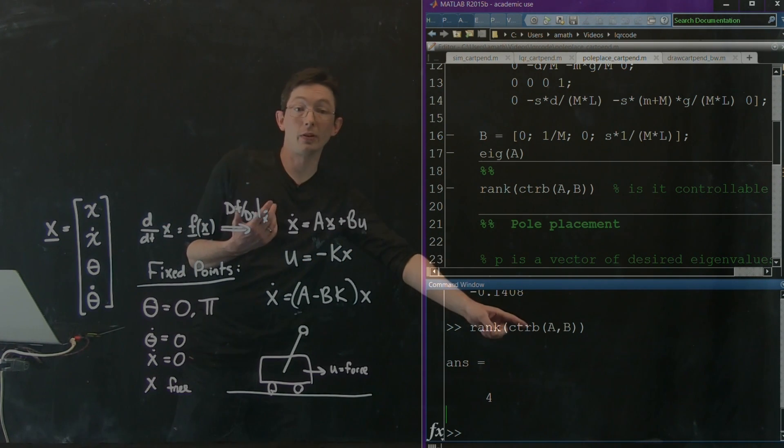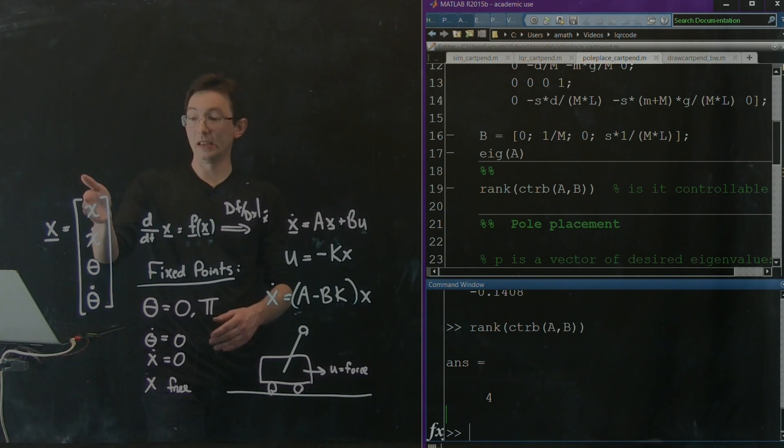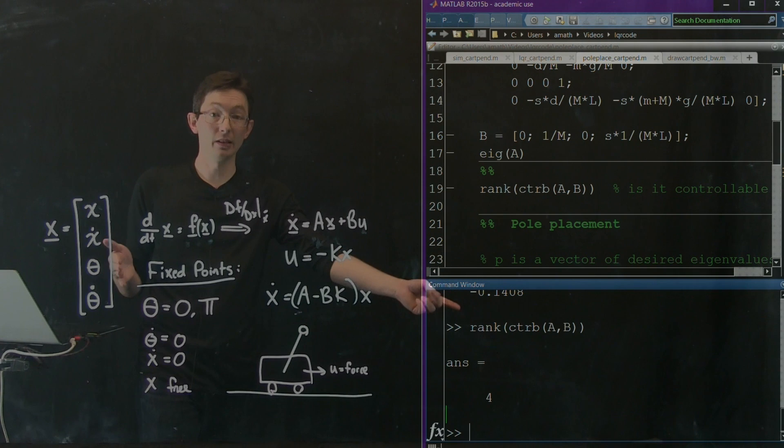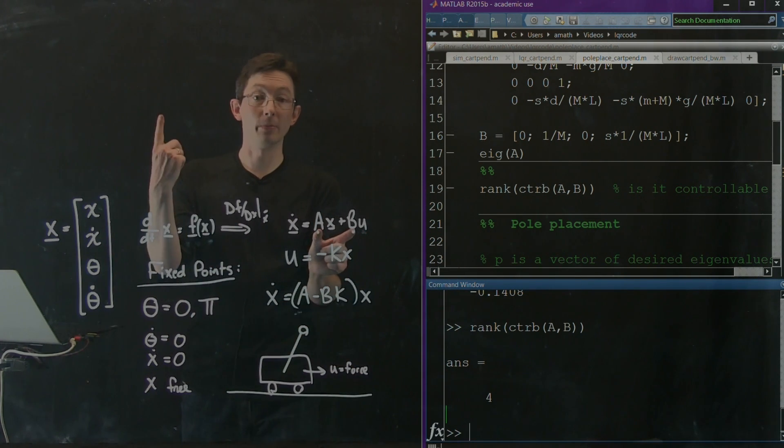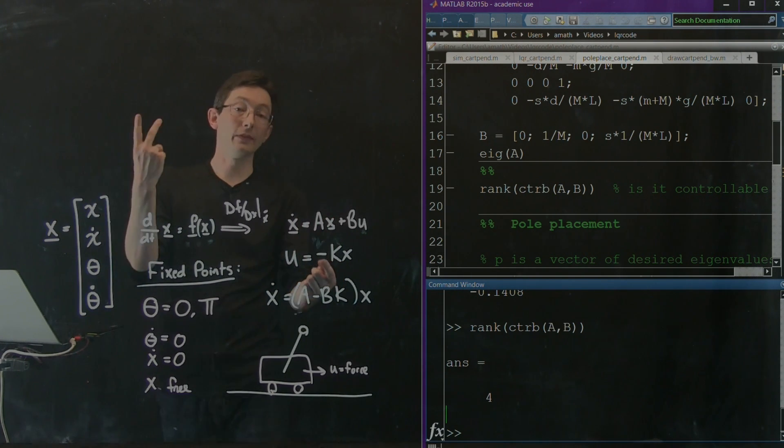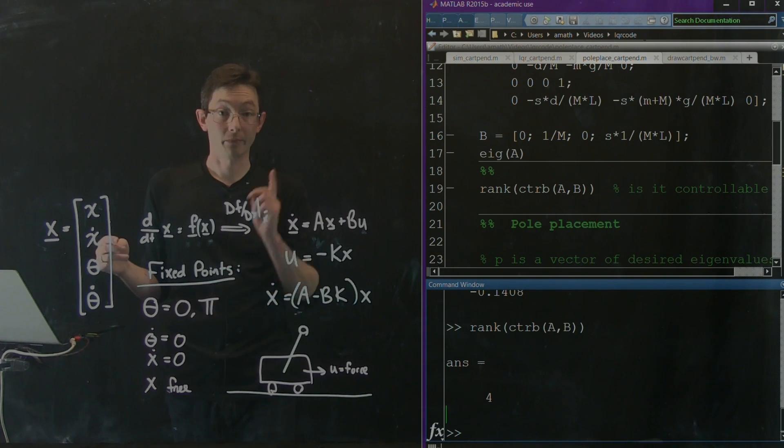And then we checked that the rank of the controllability matrix was in fact 4, which means that we span all of our state space with this controllability subspace, meaning that the system is controllable. And of course, now we know that if the system is controllable, then with full state feedback, by measuring the full state of the position and velocity of the cart and the pendulum, so this full state, then I can design this closed loop system so that the eigenvalues are anywhere I want.